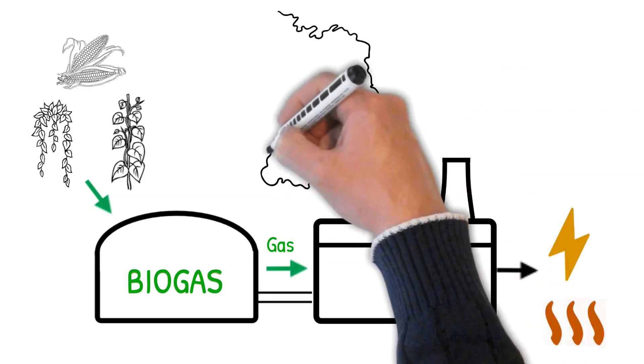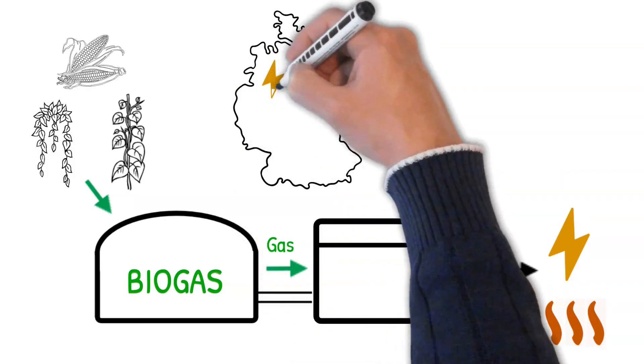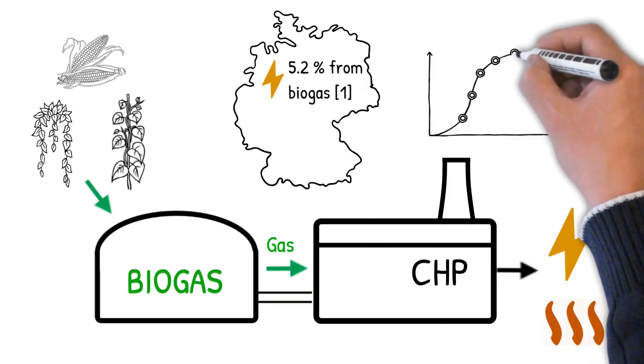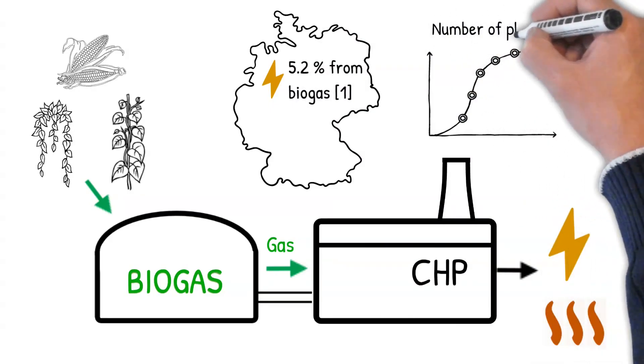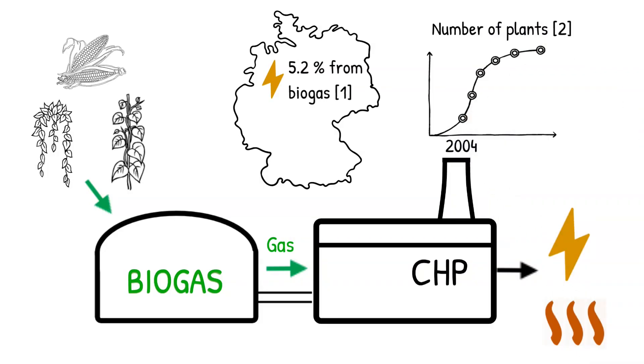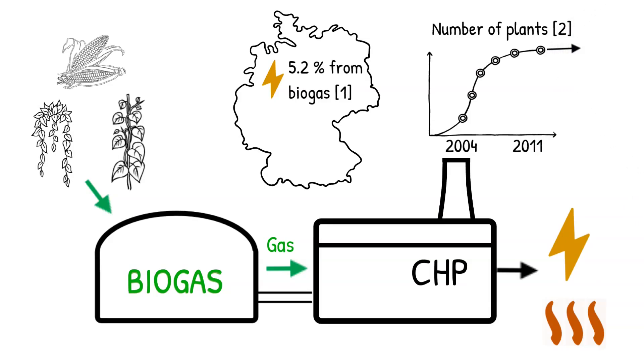In Germany, as much as 5.2% of total gross electricity consumption was covered by biogas plants in 2020. The number of biogas plants and thus their share of electricity generation increased sharply in Germany, especially from 2004 to 2011, and has remained relatively constant since then.